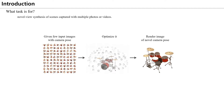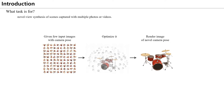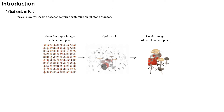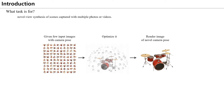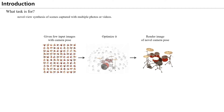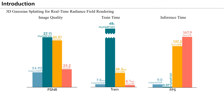The problem this paper wants to solve is the same as NeRF. When about 100 images are given with camera poses, it synthesizes an image for an un-given camera pose. When solving the task, speed and quality become the main factors.